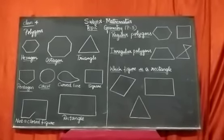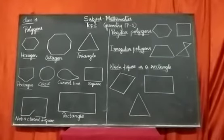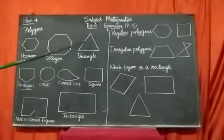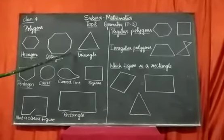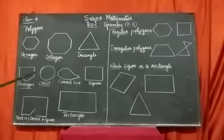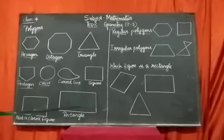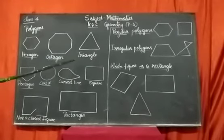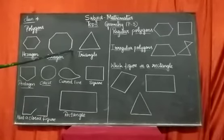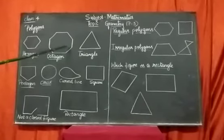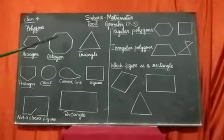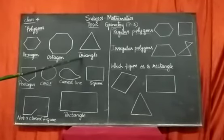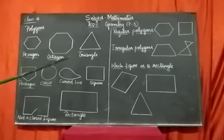Now let us go to types of polygons. A polygon formed by three line segments is called a triangle. A triangle is a polygon formed by three line segments. A triangle is a three-sided closed figure — it has three sides, three vertices, and three angles. These are known as the six elements of the triangle. A triangle is denoted by a small triangle symbol.